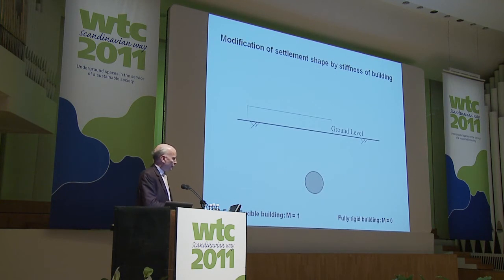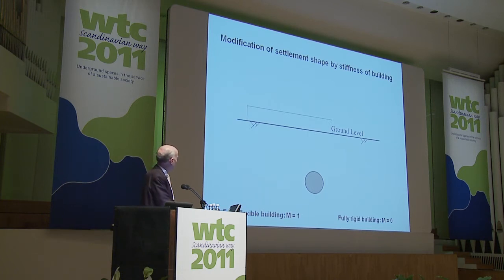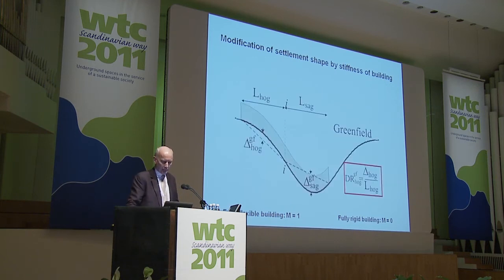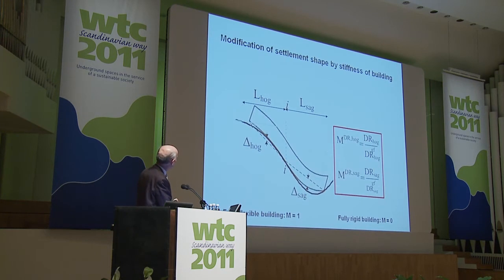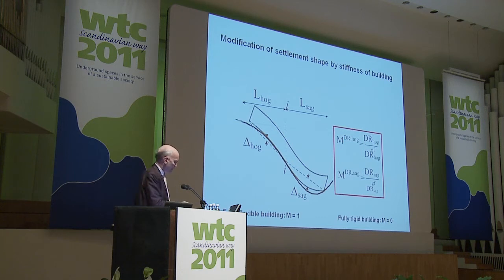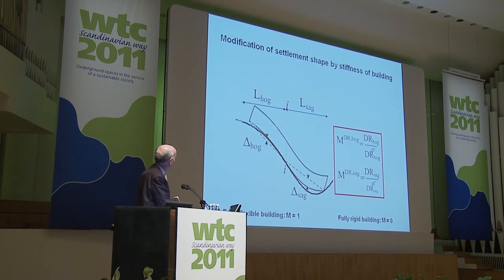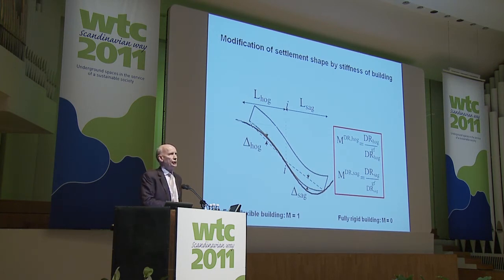How do buildings modify the shape? If we have a building above a tunnel, a fully flexible building will have a modification factor of one, and a fully rigid building a modification factor of zero. If the building is completely following the settlement trough, the factor is one. But if the building has some inherent stiffness, there will be a modification factor equal to the deflection ratio of the building divided by that of the green field situation. If the building is completely rigid, M equals zero and the building just tilts rigidly.